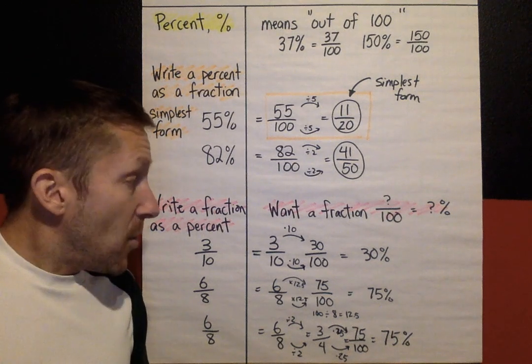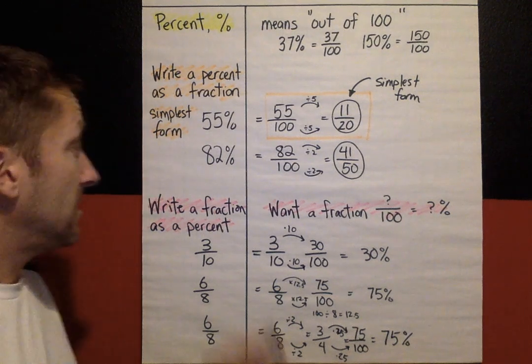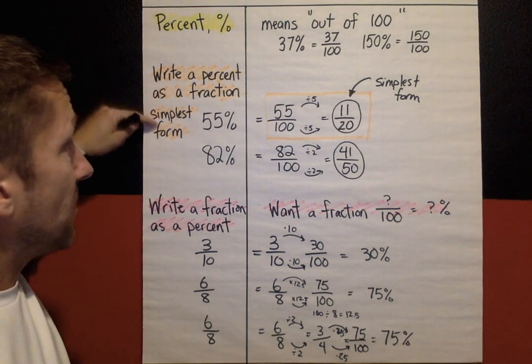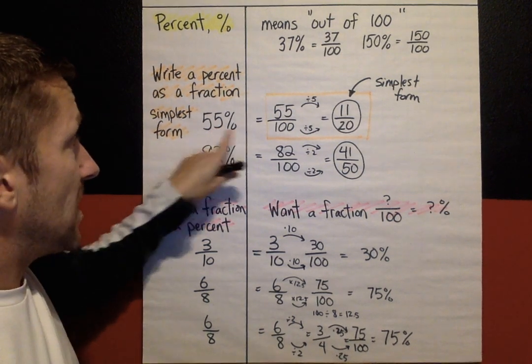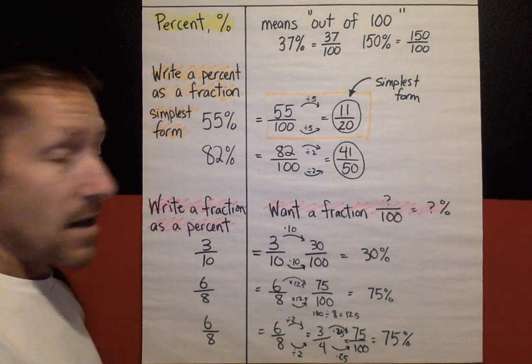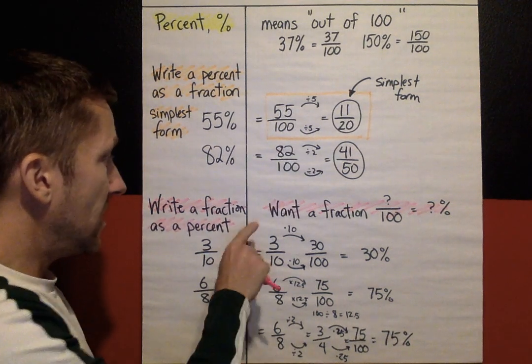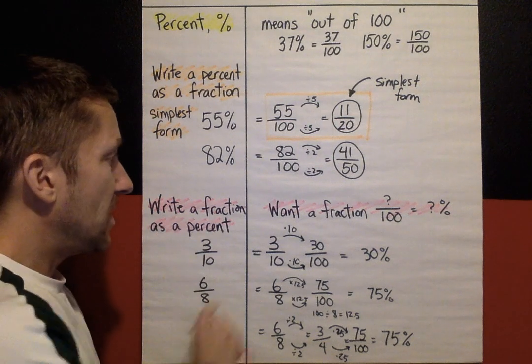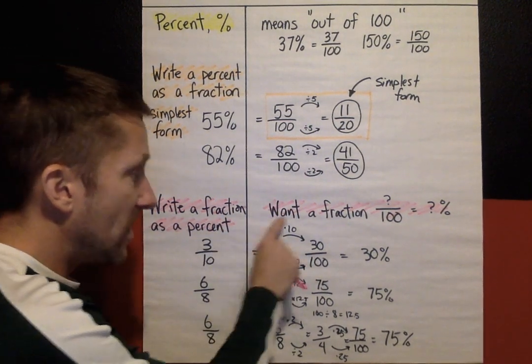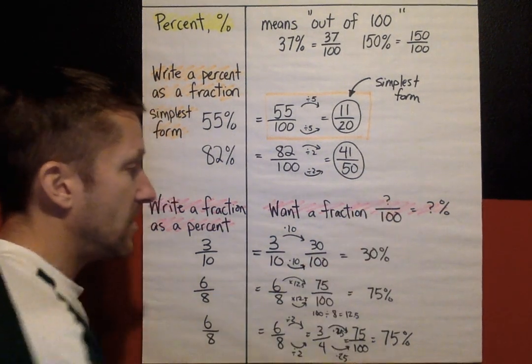So half of your problems today, half of your practice is this: starting with a percent, writing it as a fraction. You make the percent out of 100 in the simplest form. The other half of your practice today is this, write a fraction as a percent. Well, you've got your goal here, if you're starting with a fraction, is you want to change it so that it's out of 100 somehow.